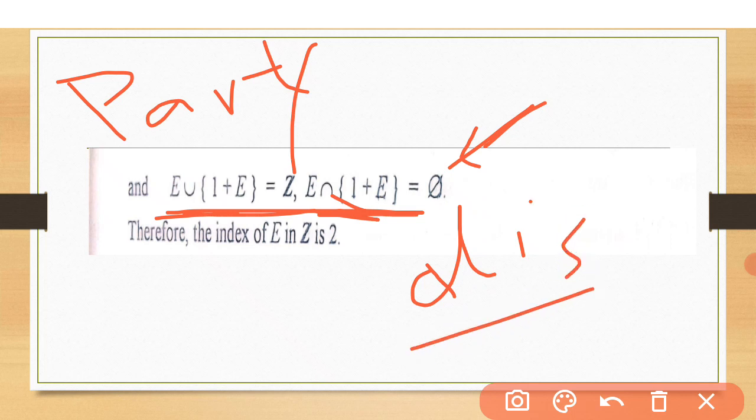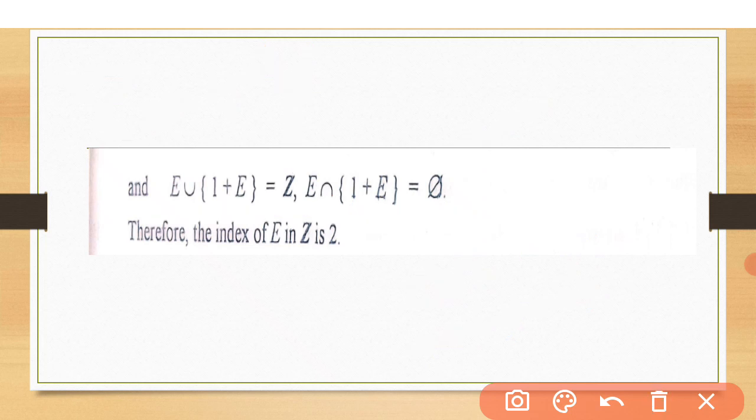This means all the left cosets have no common element. So we find the two left cosets, E and 1 plus E. That's why the index of E in Z is 2. Similarly, you can find other indexes of other groups and subgroups. Hope you understood.